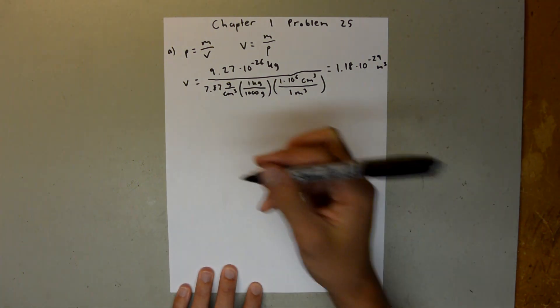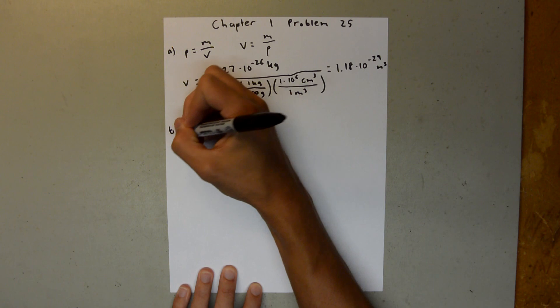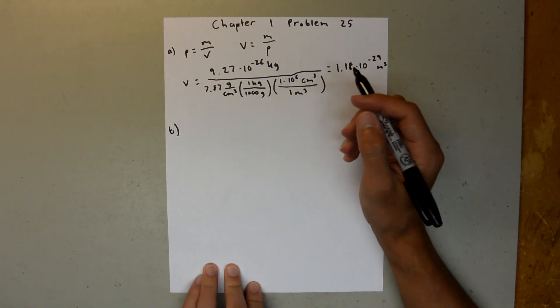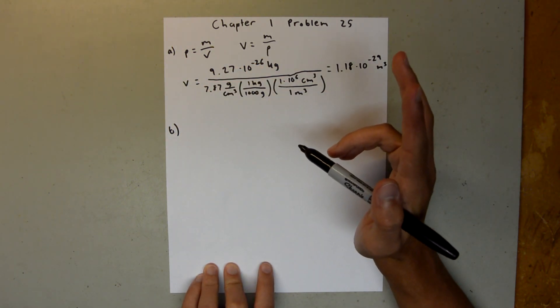So that's Part A, and now for Part B, we need to find the distance between two adjacent atoms.